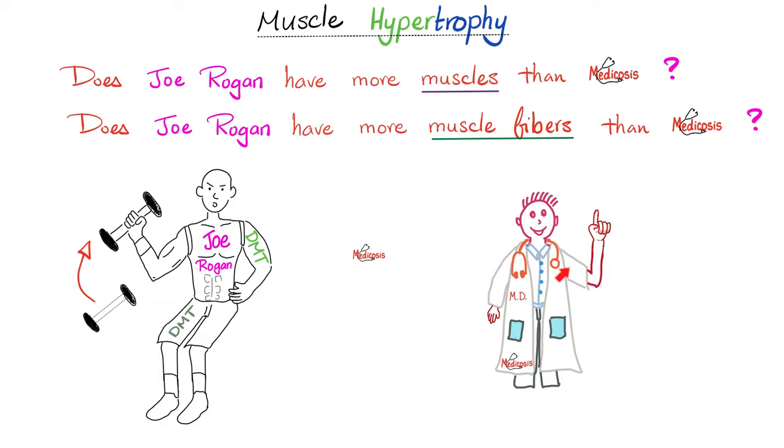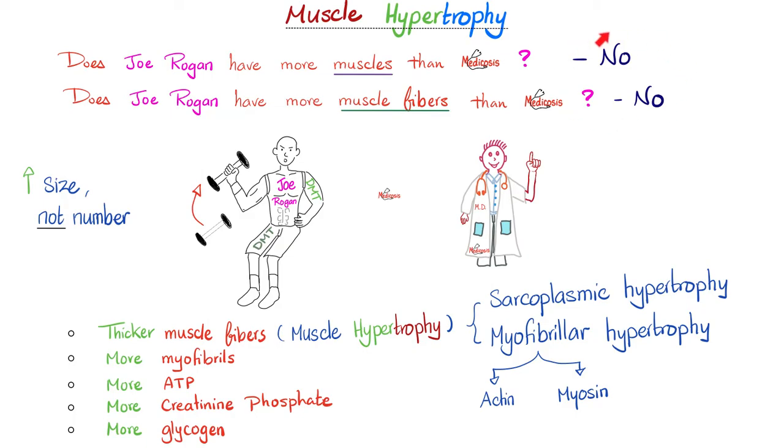Look at this shredded dude right here compared to me. As a lady once said to me, Medicosis, you have the arms of a thinking man. I don't know whether to be happy or upset. Do you think Joe Rogan has more muscles than me? Do you think Joe Rogan has more muscle fibers than me? The answer to both questions is in the negative. No.